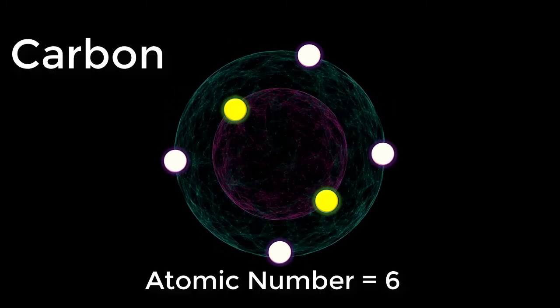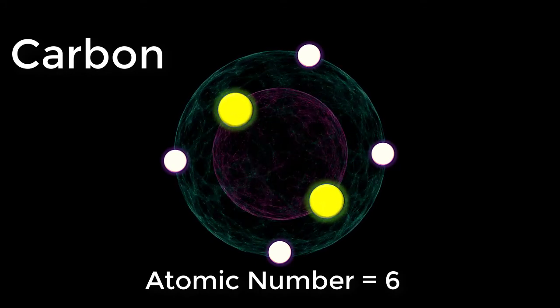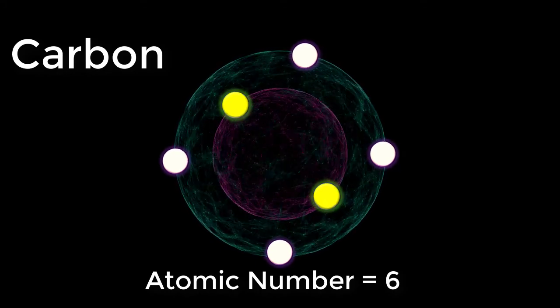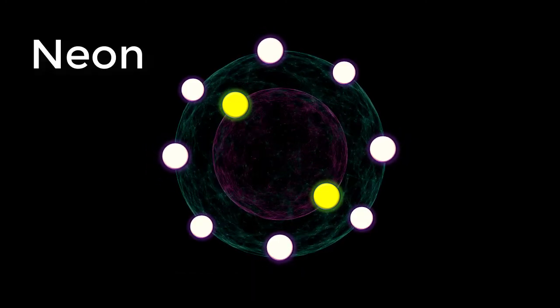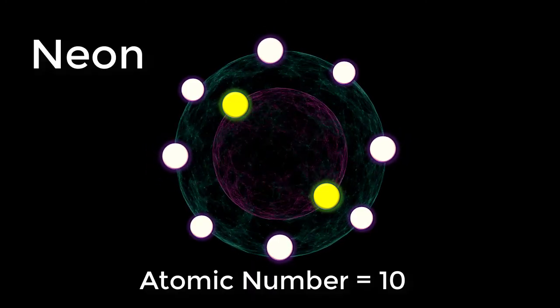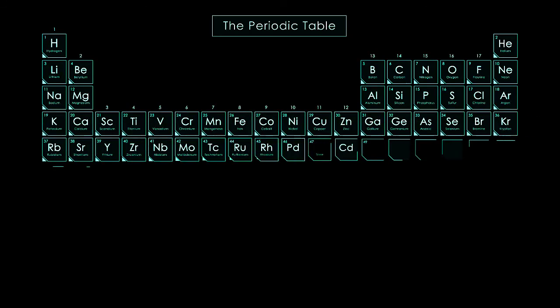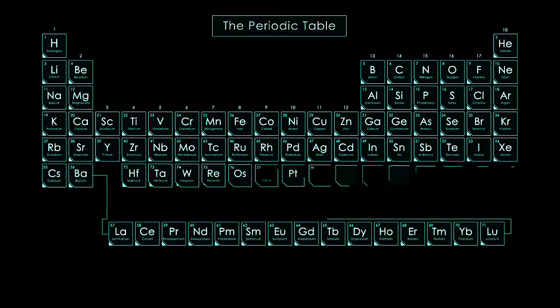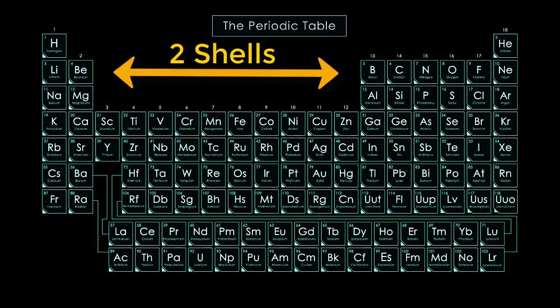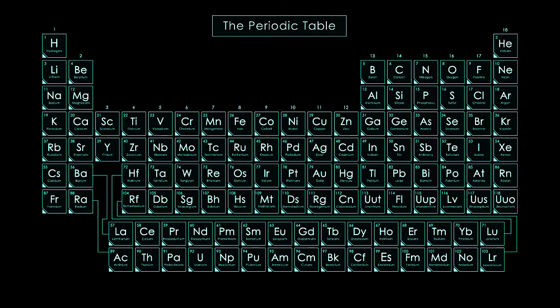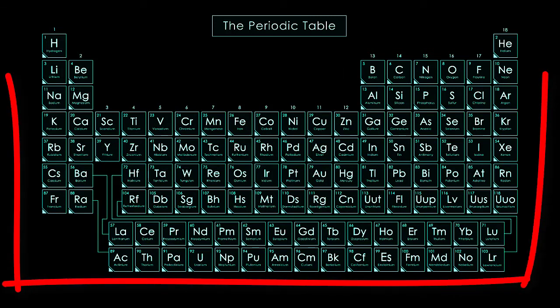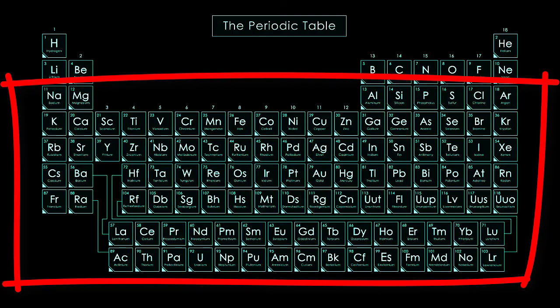The second shell can accommodate as many as eight electrons. Carbon, with its six electrons, entirely fills its first shell, and half fills its second. With ten electrons, neon entirely fills its two electron shells. A look at the periodic table reveals that all of the elements in the second row, from lithium to neon, have just two electron shells. Atoms with more than ten electrons require more than two shells. These elements occupy the third and subsequent rows of the periodic table.